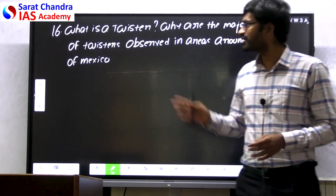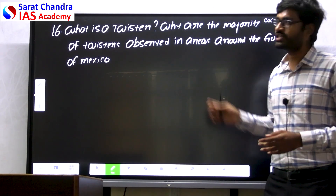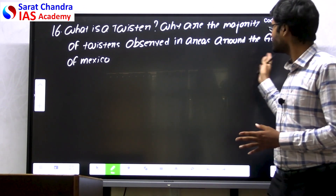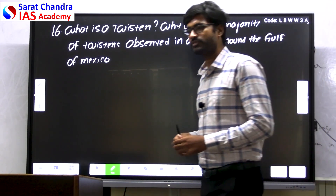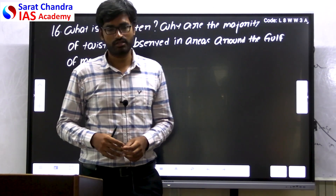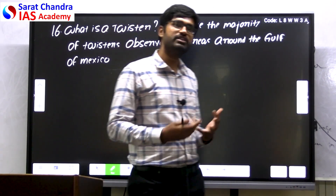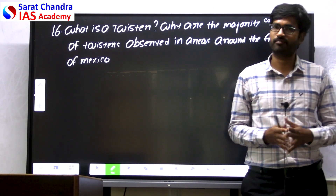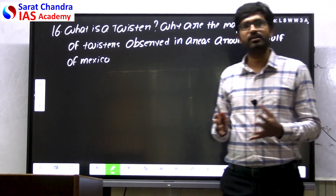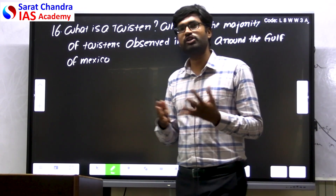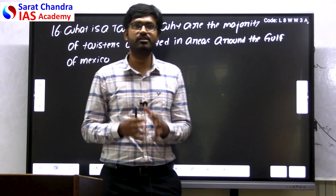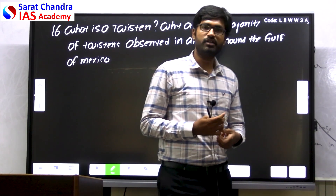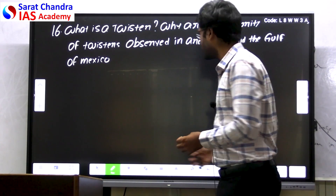The next question is: what is a twister? Why are the majority of the twisters observed in the areas around the Gulf of Mexico? This is a new term — when teaching, we generally mention the term tornadoes. Twister is nothing but a tornado; it is the other name for tornado.